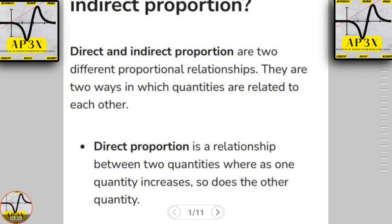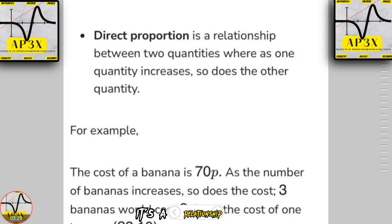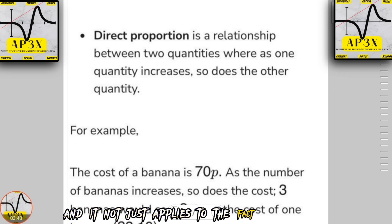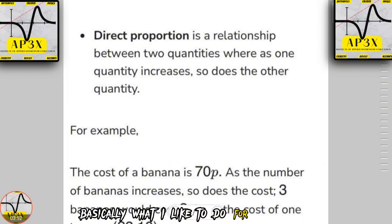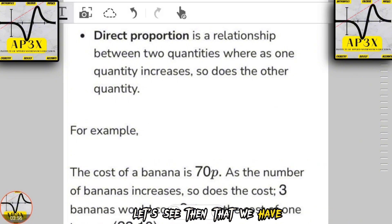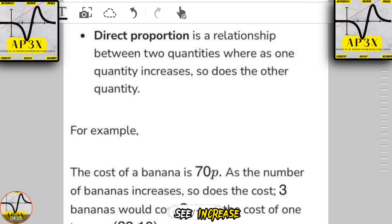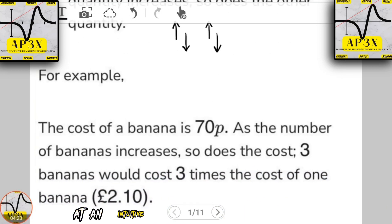For direct proportion, we are looking at a relationship between two quantities such that when one quantity increases in value, so does the other — and it also applies when the quantity decreases in value. Basically, if we have two particular quantities and one of them increases, you'll find that the other quantity also travels in the same direction.